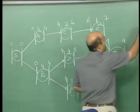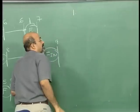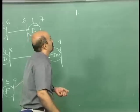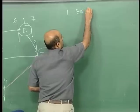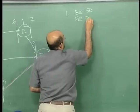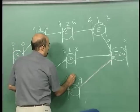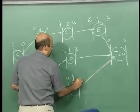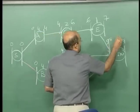My first step — I want to start crashing. What would be my first option? What are my options? B at 150 or F at 50. Obviously I will choose F at 50. And how much can F go? F can go all the way from 5 to 2. Let us decrease it step-wise — 5 to 4.